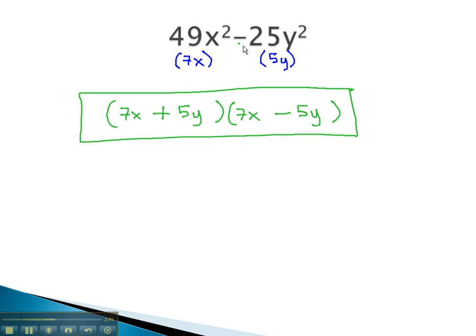If we can recognize the difference of squares, where we're subtracting and can take the square root of both terms, we can quickly factor it to a sum and difference of the square roots.